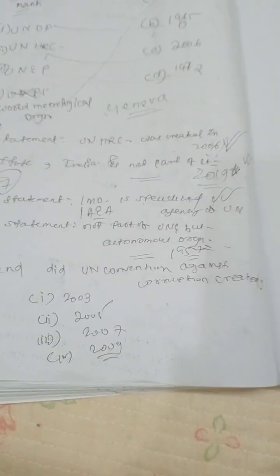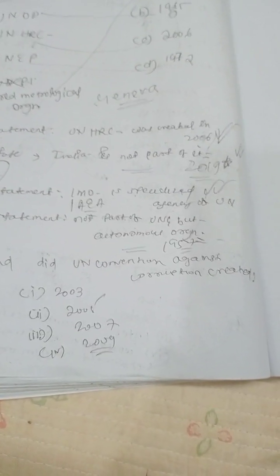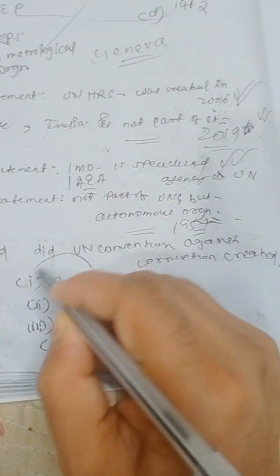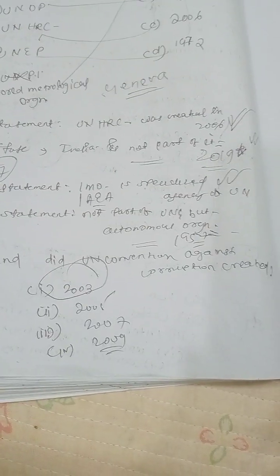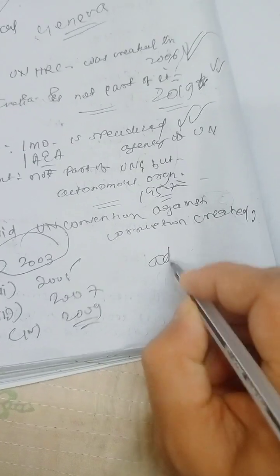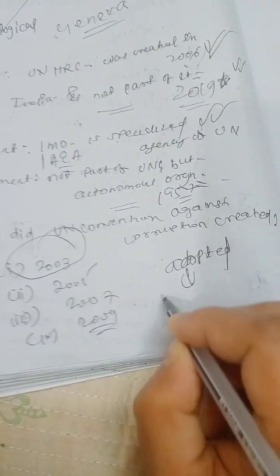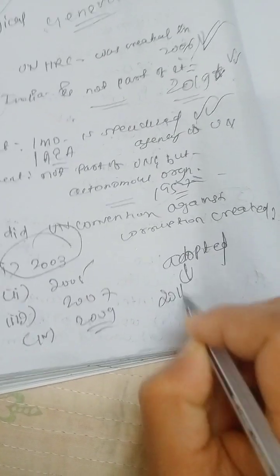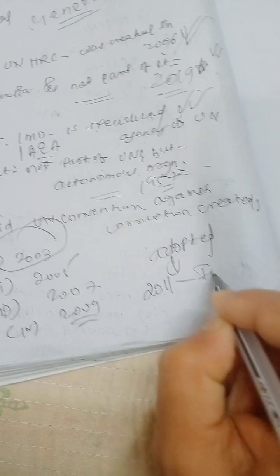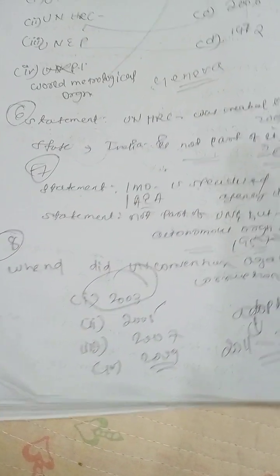Question eight: when was the UN Convention Against Corruption created? It was created in 2003. India adopted the UN Convention Against Corruption in the year 2011. This is an important fact to remember.